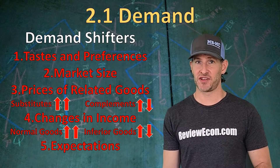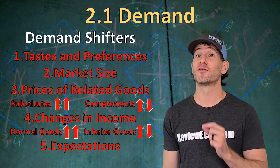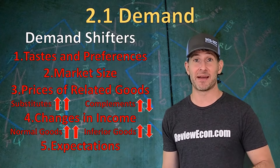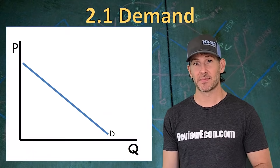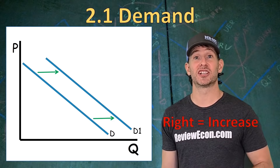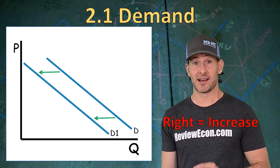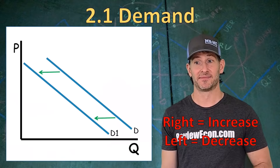The last demand shifter is expectations for the future. Sometimes guesses about what's going to happen later on impact consumer behavior today. For example, when buying a television, I might wait until Black Friday when they're on sale — so I demand fewer today and buy more later. If any of those things change, it can cause our demand curve to shift. A rightward shift is an increase — a higher quantity demanded at all prices. A shift to the left is a decrease — lower quantity demanded at all prices.